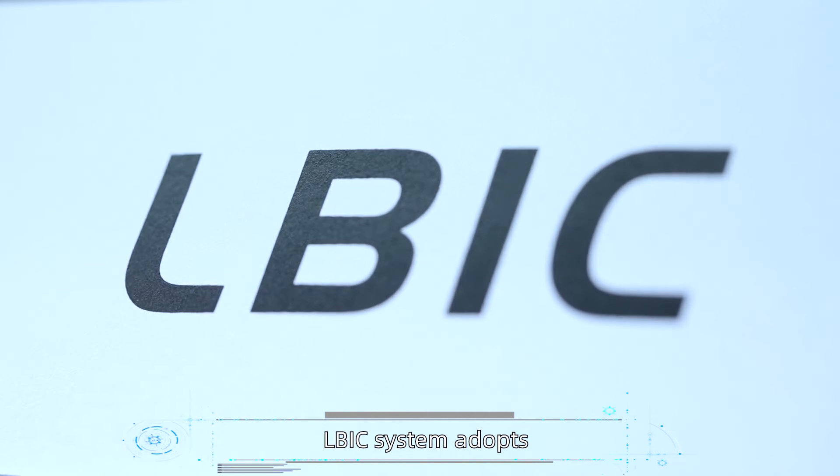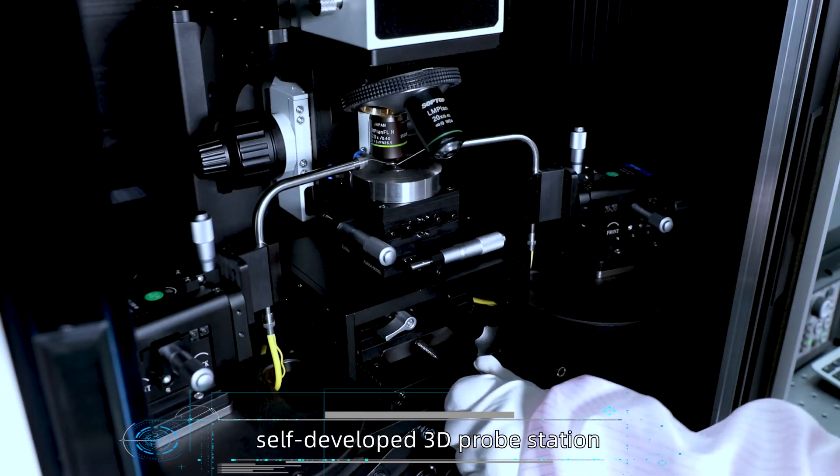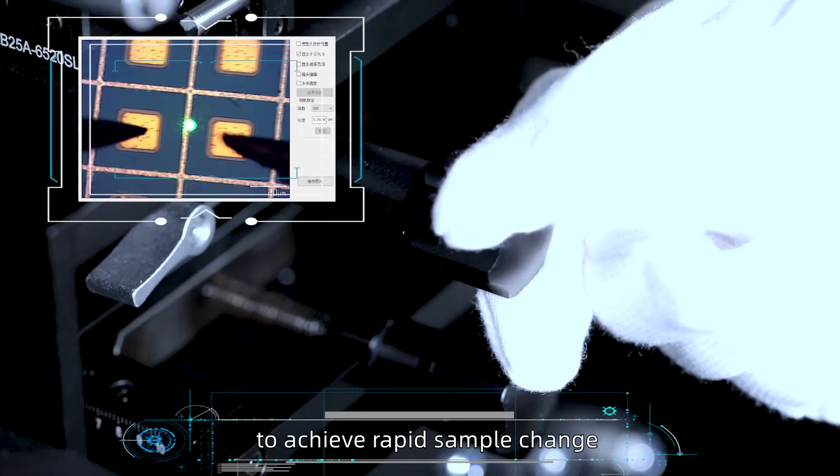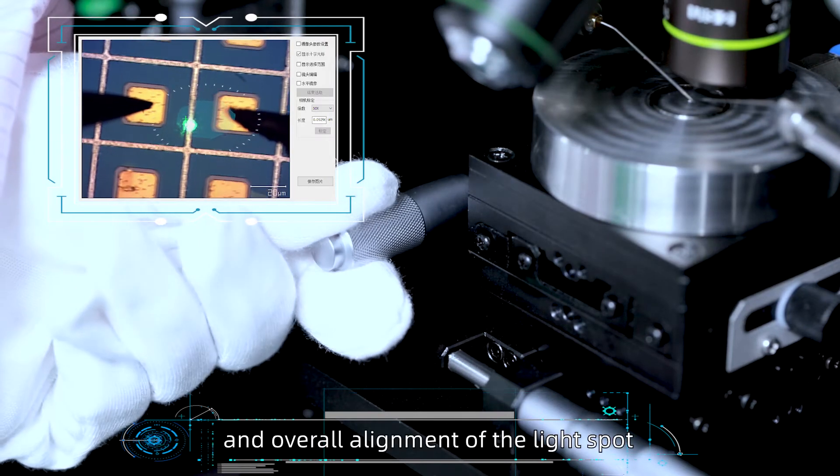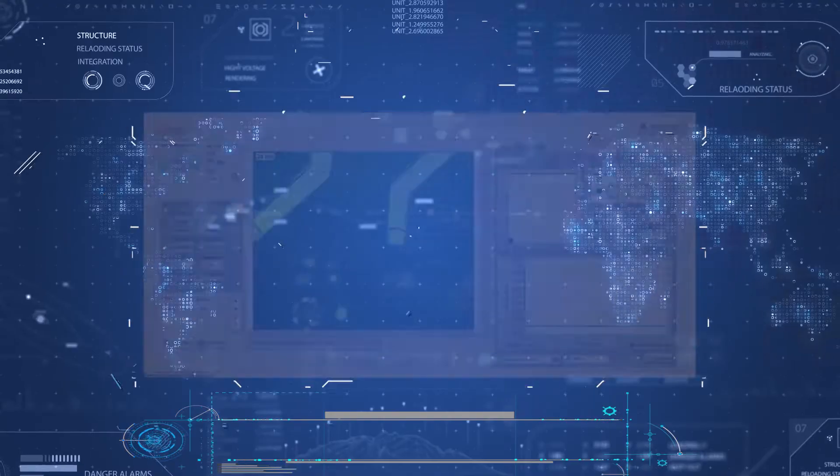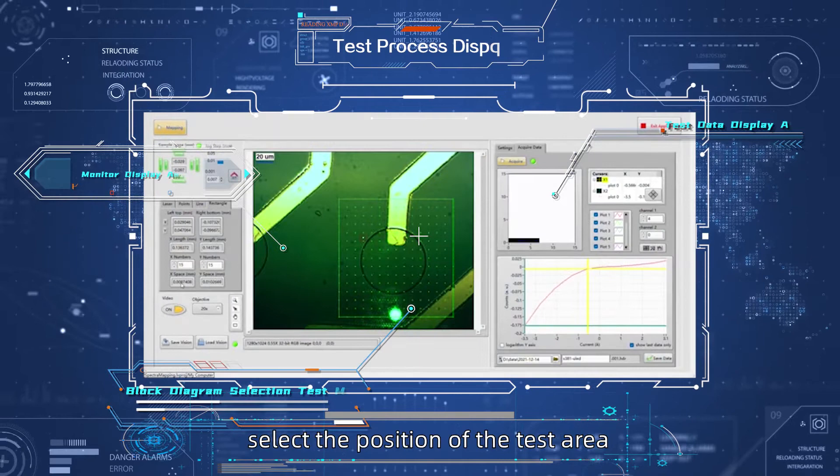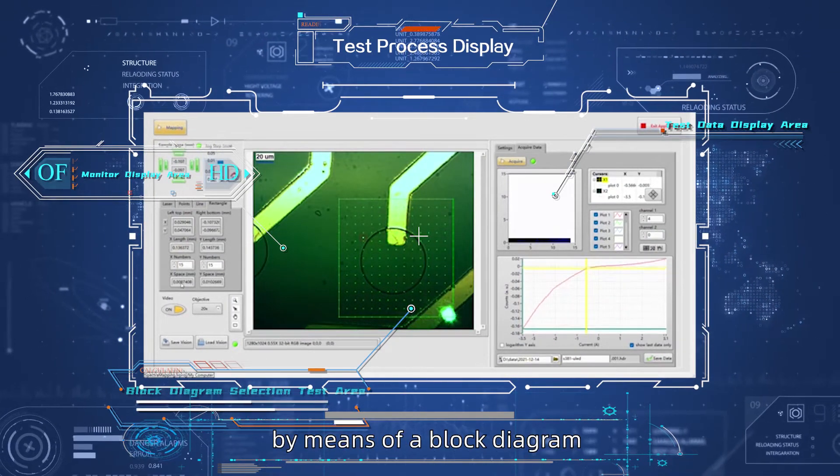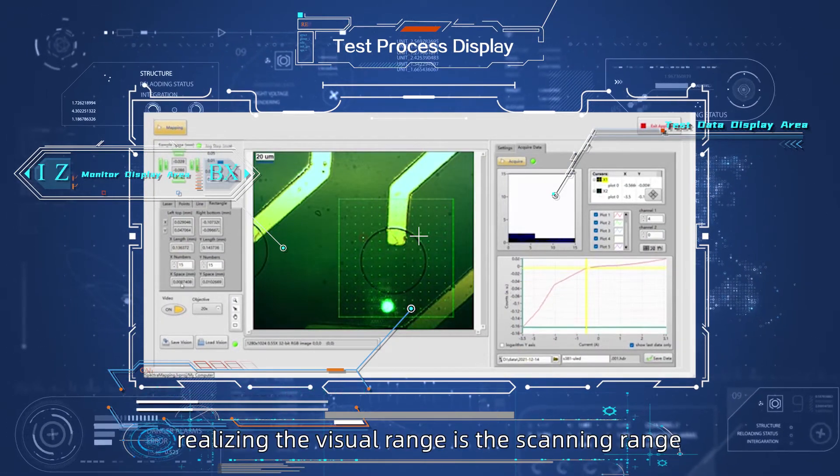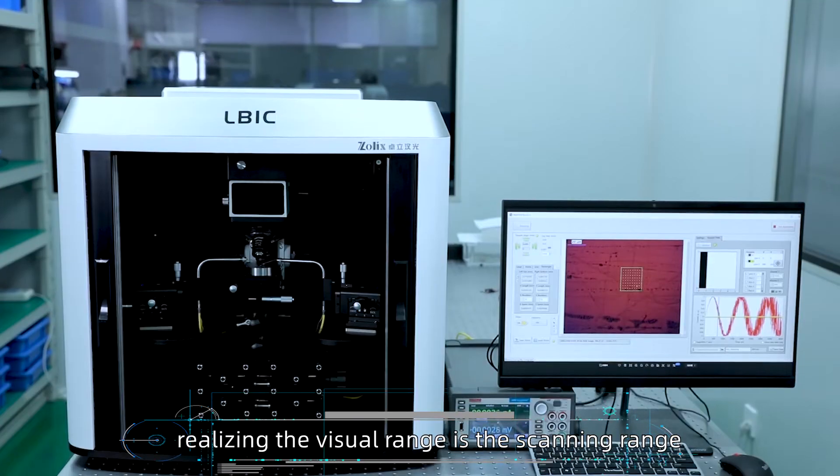Based on practical applications, the LBIC system adopts a self-adapted 3D probe station to achieve rapid sample change and overall alignment of the light spot. The visual software selects the position of the test area by means of a block diagram, realizing that the visual range is the scanning range.